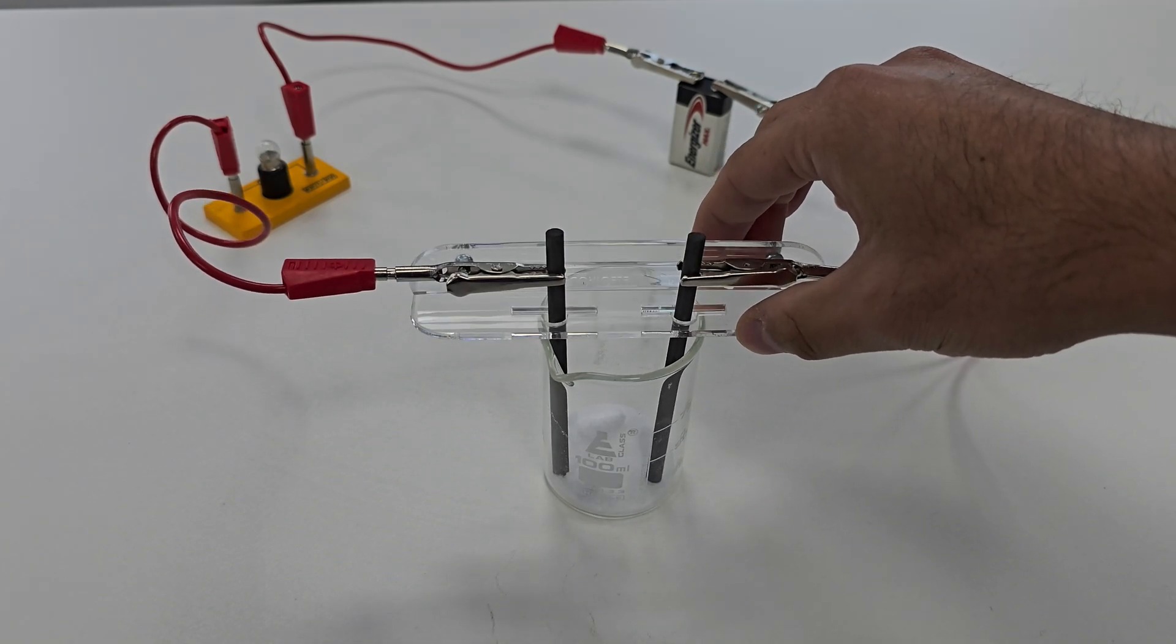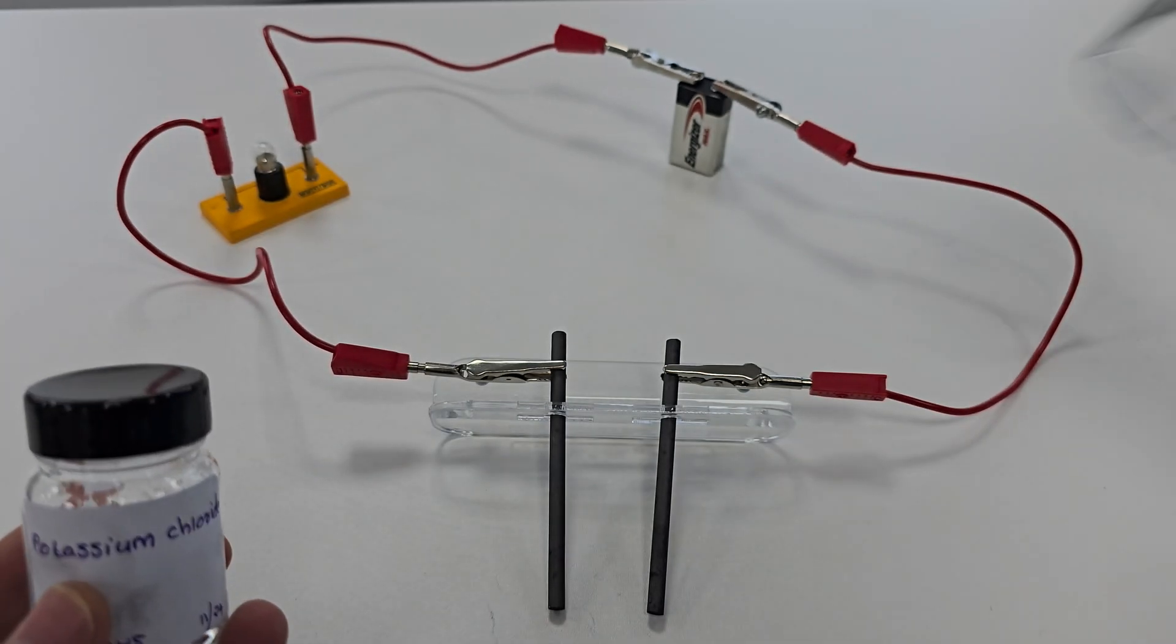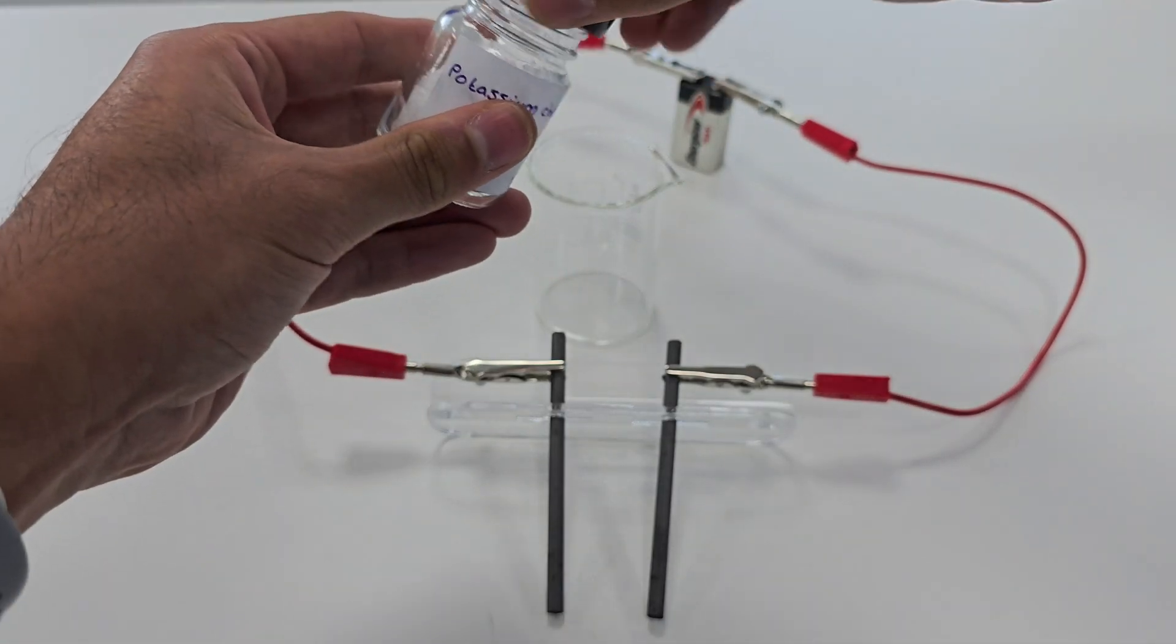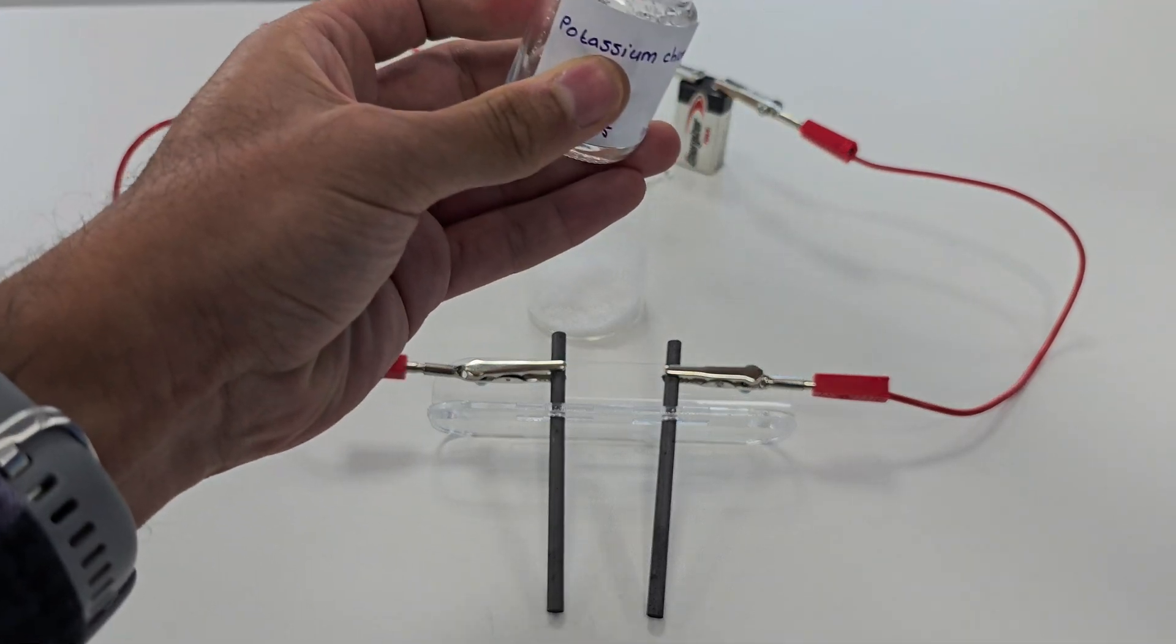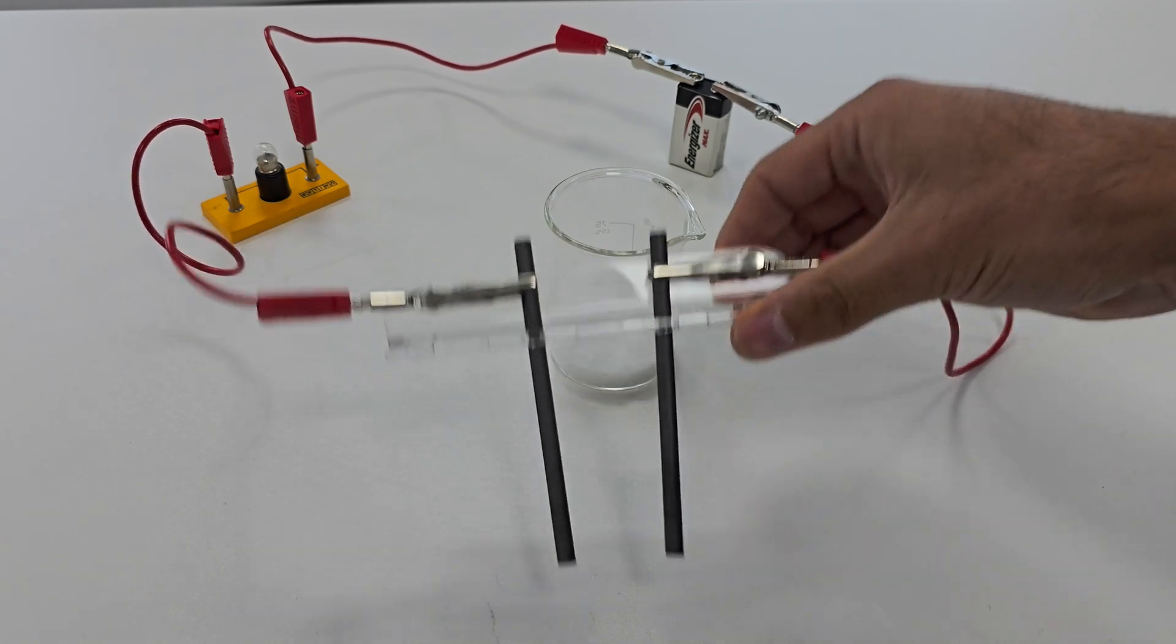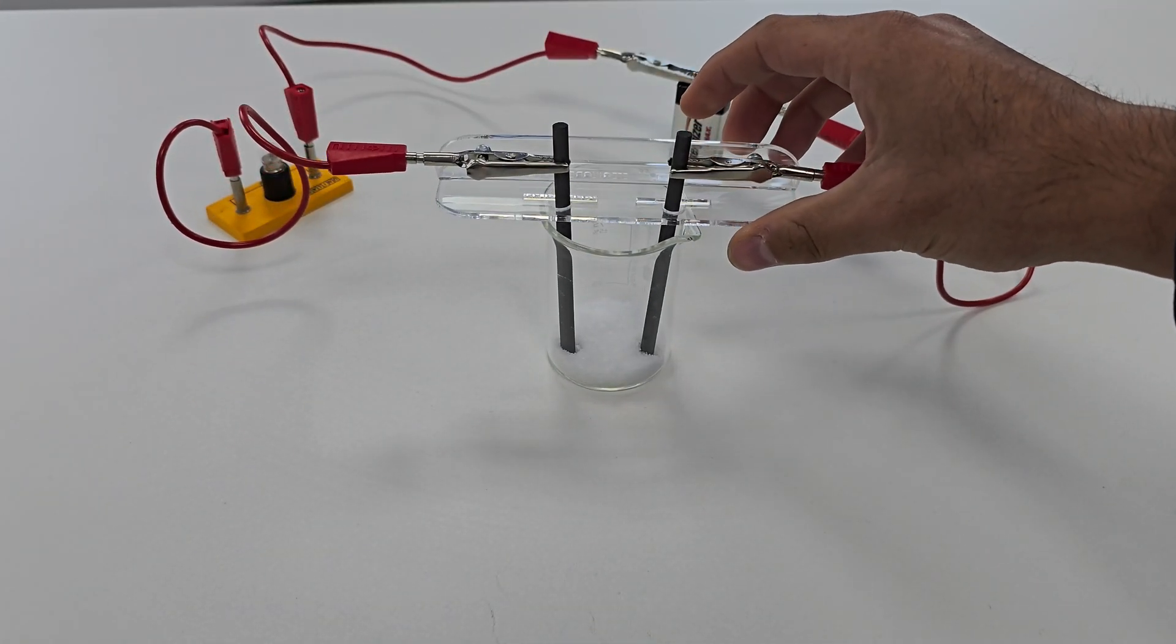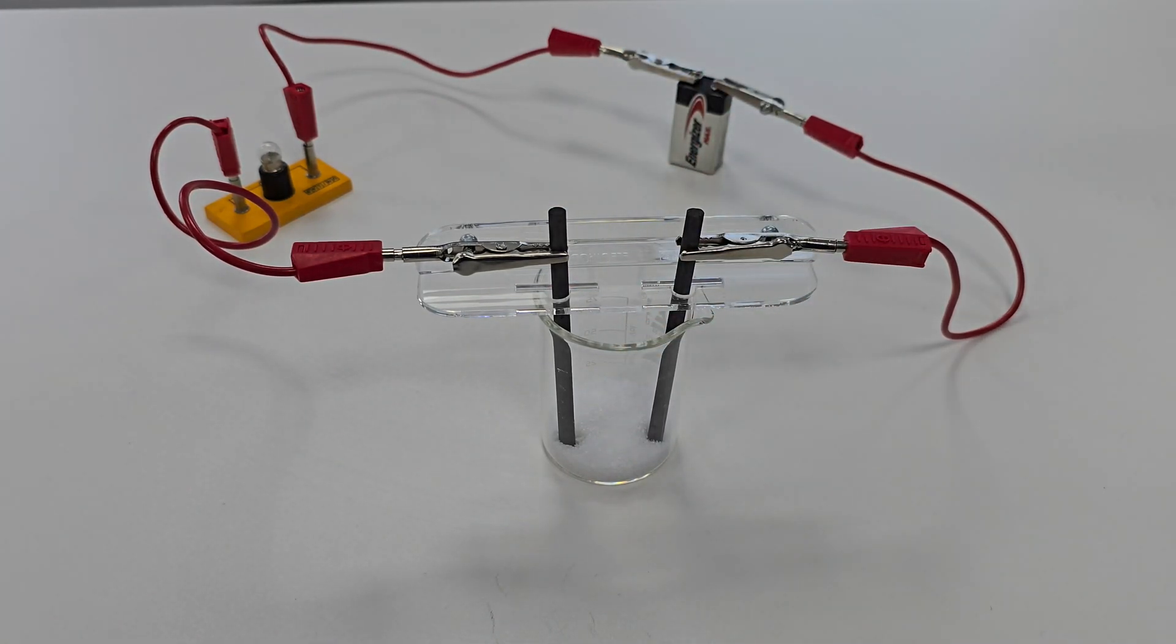Let's repeat this experiment with potassium chloride, another ionic compound. Like sodium chloride, its ions are locked in a rigid lattice in the solid state. Again the bulb does not light up, showing that solid potassium chloride is also a non-conductor.